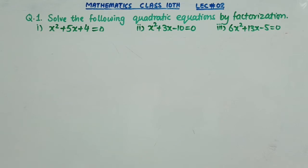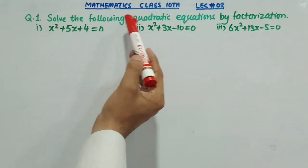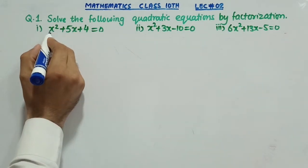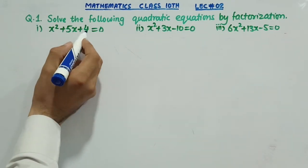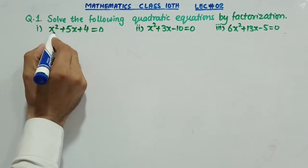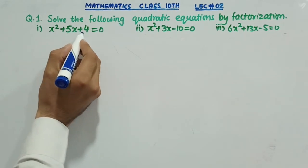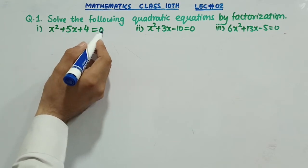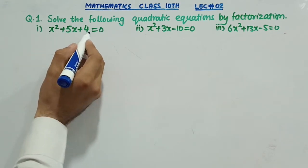I have a picture of the following quadratic equation by factorization. The quadratic equations are solved by factorization. When we have the standard or general form, we have an x squared term, a linear x term, and a last constant equal to 0. This is arranged in ascending and descending order.